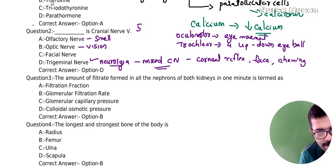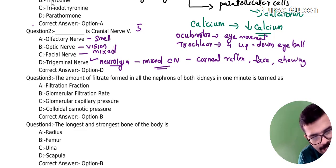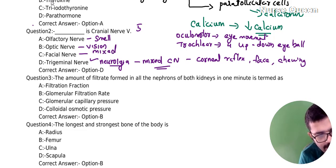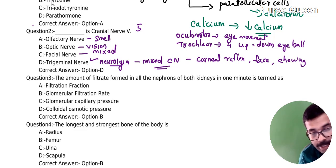Abducens (6th) means lateral movement of the eyeball. Facial (7th) is a mixed nerve — functions include tear production, saliva production, and movement of the face.